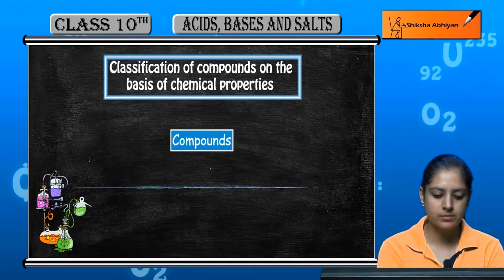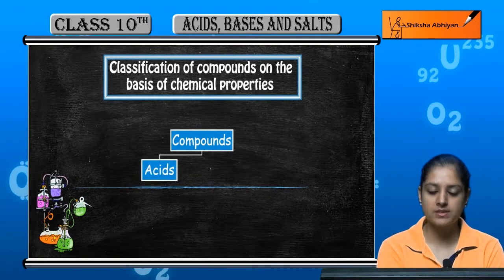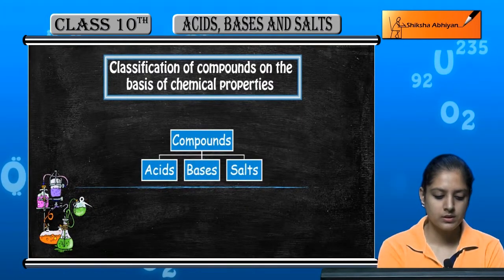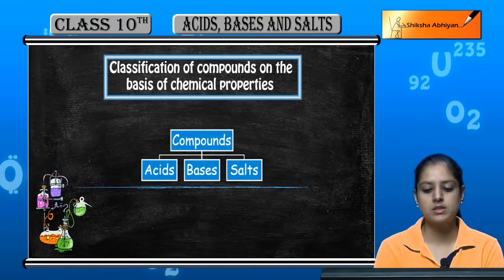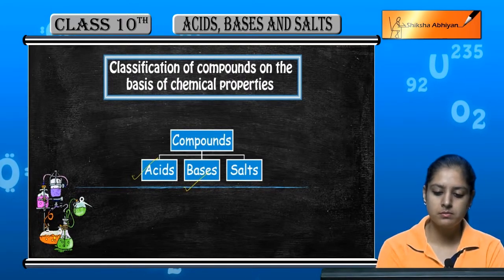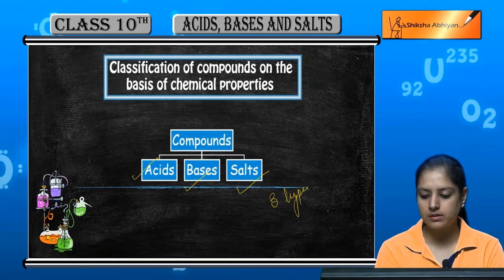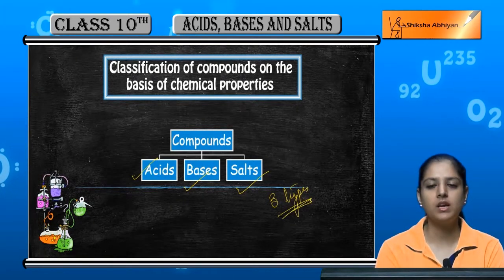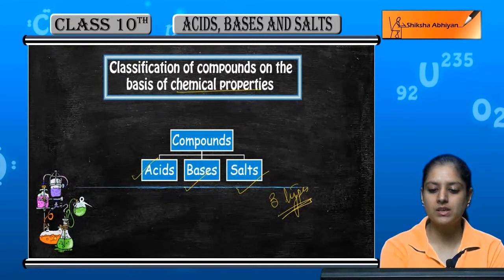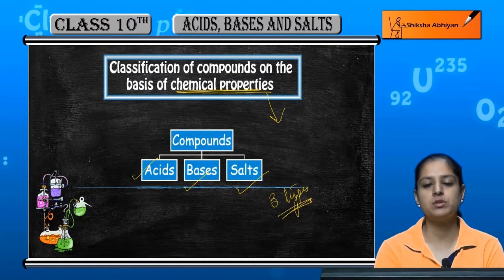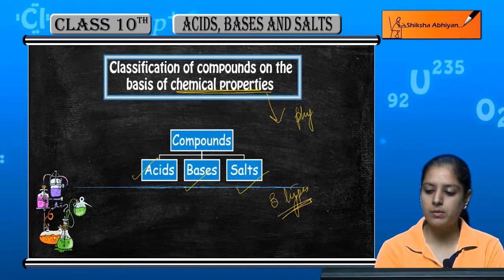First is acids, second is bases, and third is salt. So acids, bases, or salt - these three types of compounds are on the basis of their chemical properties. Chemical properties and physical properties is a difference.